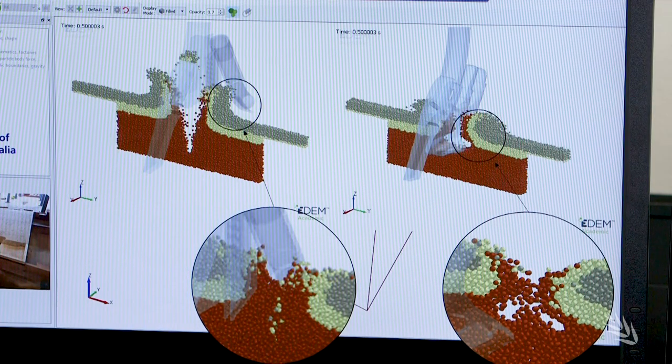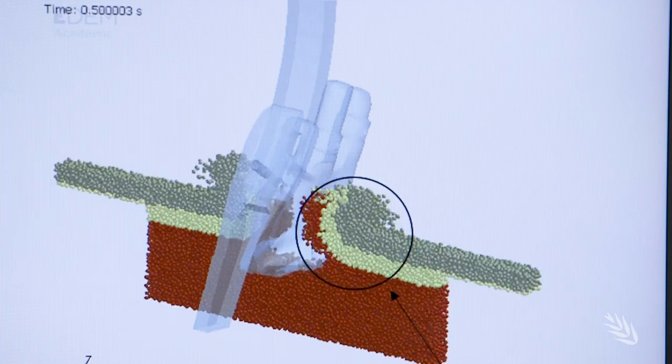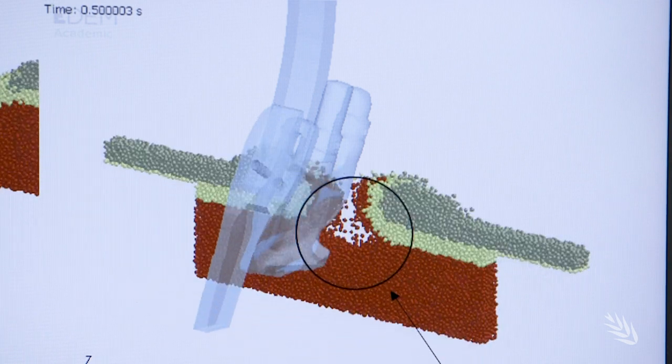As well as amelioration, mitigation solutions are being investigated. Simulations of sowing are being studied to find ways to keep non-wetting soil and herbicides out of seed furrows.